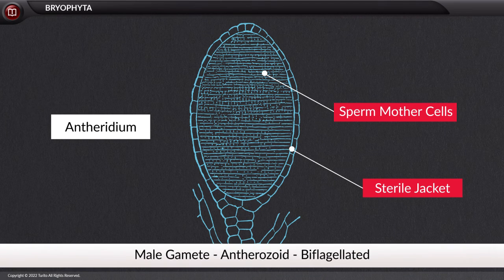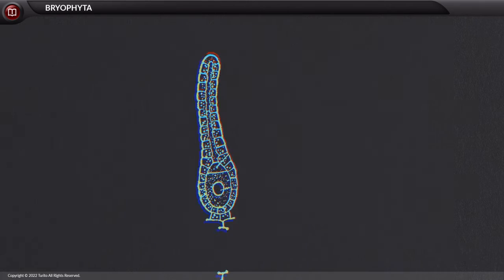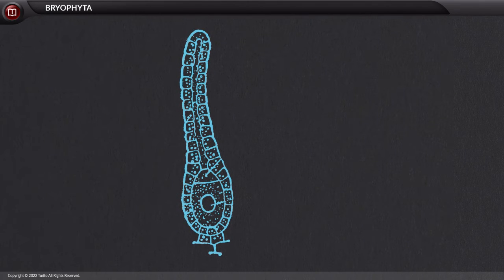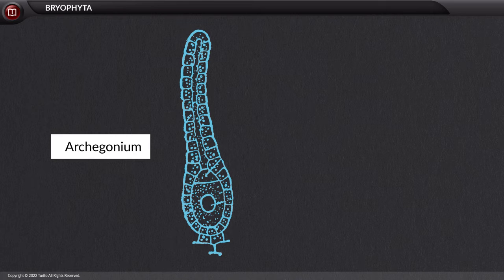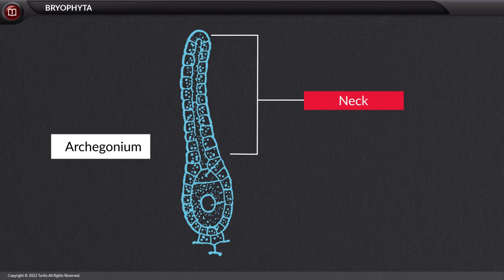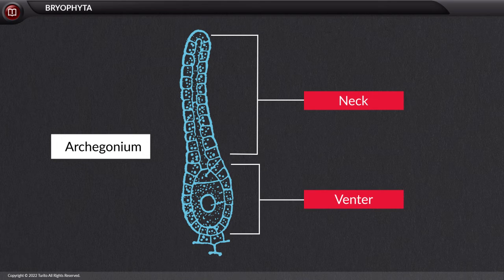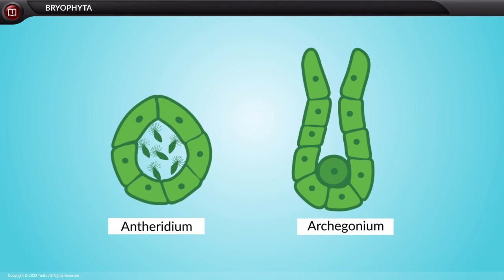The sperm mother cells develop into the male gamete, the antherozoid, which is biflagellated — meaning it possesses two flagella that help in swimming. The female reproductive organ, the archegonium, is flask-shaped, having a long neck and a swollen basal region called the venter, which bears the female gamete egg.